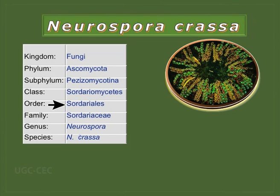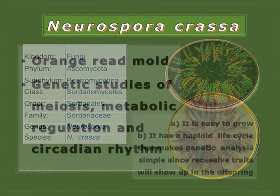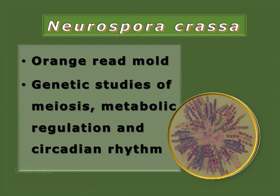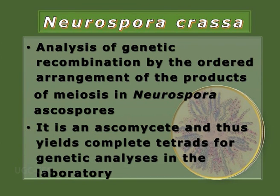The next mold is Neurospora crassa. It belongs to class Sordariomycetes, order Sordariales, family Sordariaceae, genus Neurospora, and species crassa. It is easy to grow and has a haploid lifecycle, which makes genetic analysis simple as recessive traits appear in offspring. Also known as orange-red mold, it is used in genetic studies of meiosis, metabolic regulation, and most importantly in the study of circadian rhythm. Neurospora crassa is used in the analysis of recombination during meiosis and, being an ascomycete, yields complete tetrads for genetic analysis.